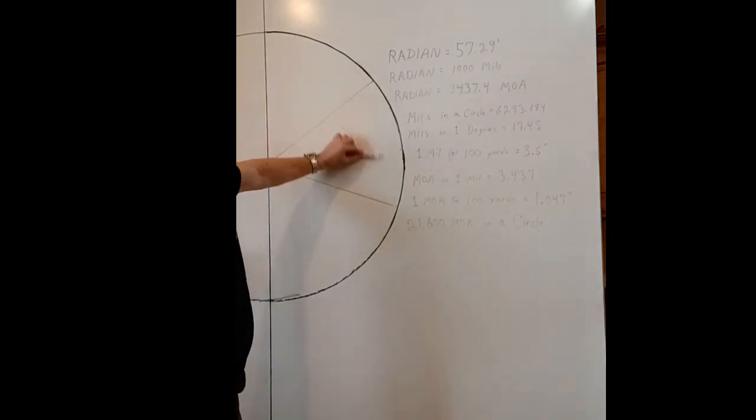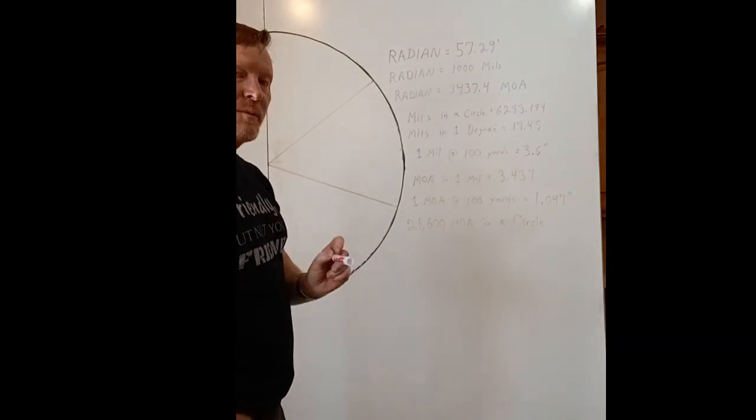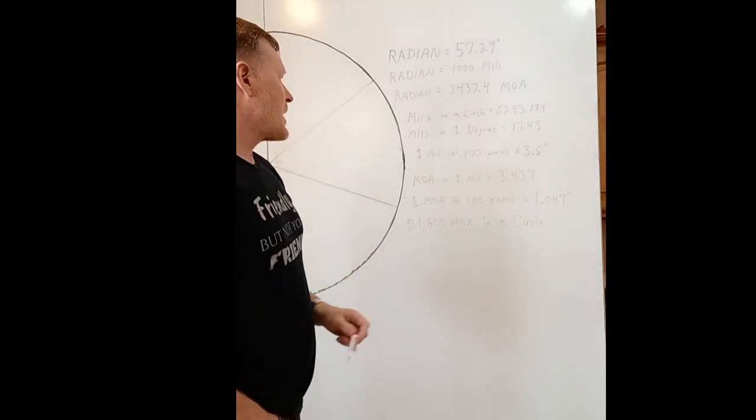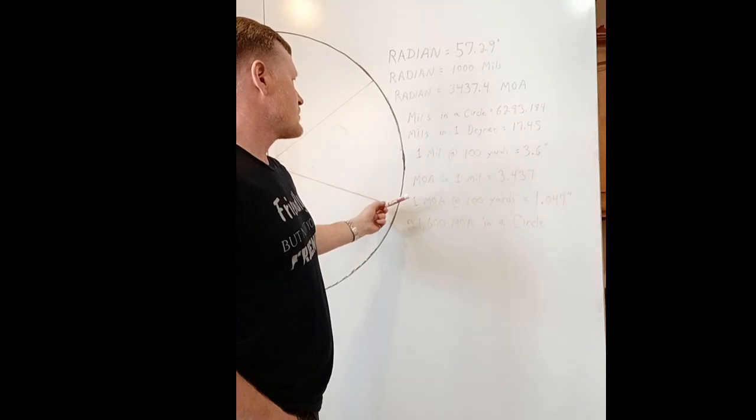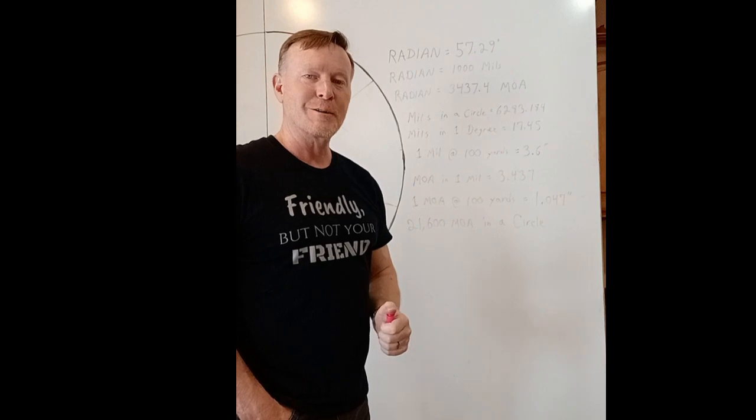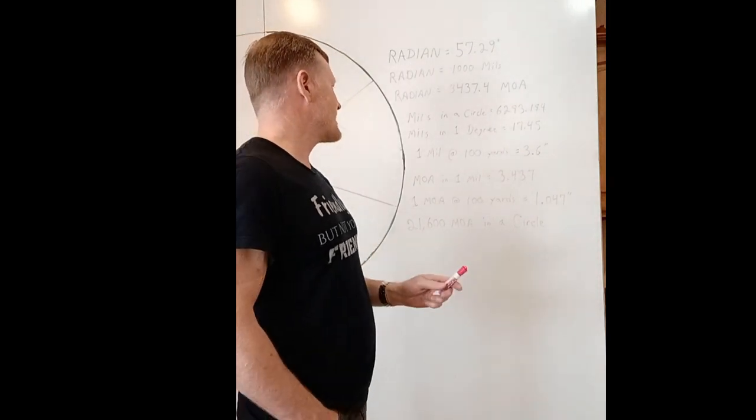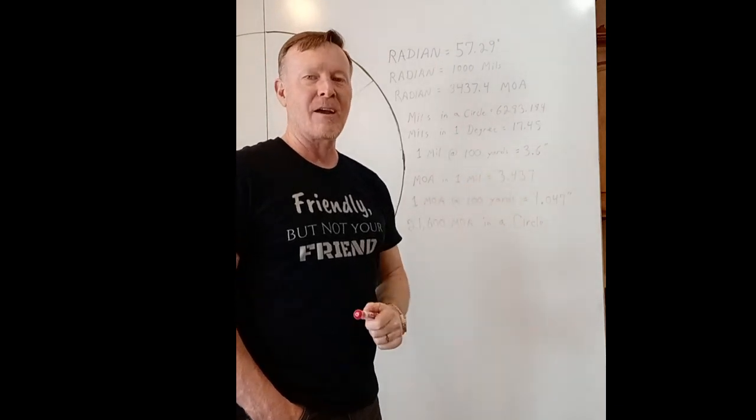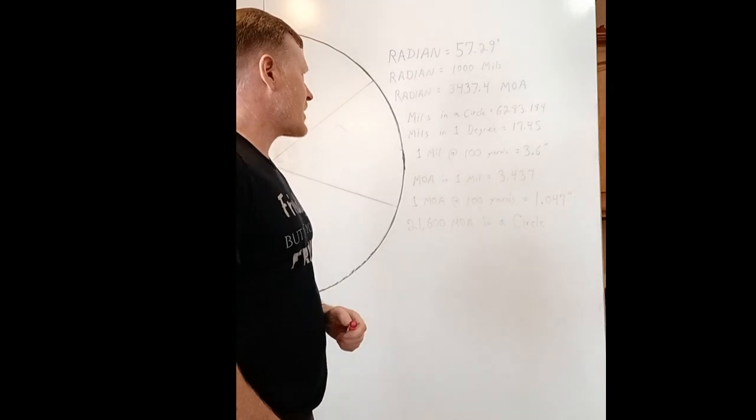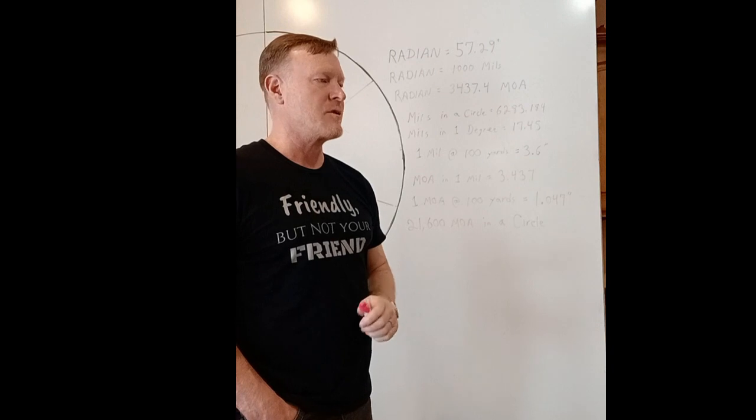Okay, so we have this radian here, 57.29 degrees. And there's also been some discussion about how many minutes of angle are in one mil. And I got in a discussion with a world champion shooter who insisted that there were 3.6 minutes of angle in one mil. And I'm like, no, actually, there's 3.437. And he was adamant that there's 3.6.